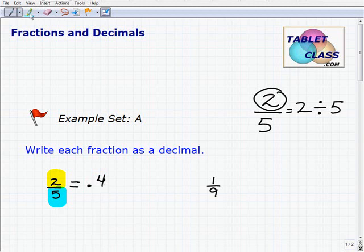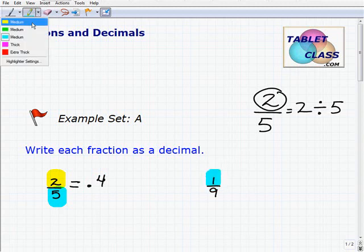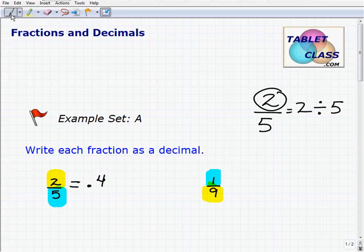Alright, so we'll move on to our next problem, 1 ninth. So we're going to take 1 and divide it by 9. So we'll go ahead and type that into your calculator. So we get 1 divided by 9.